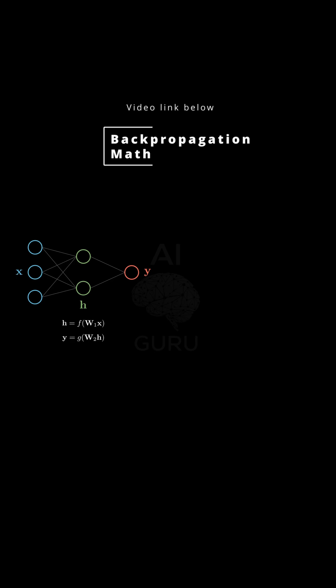In the multivariate case, one input can affect multiple intermediate variables, and all of them can affect the final output. So you have to sum up all those different paths of influence.